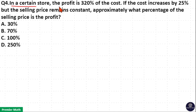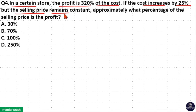In a certain store, the profit is 320% of the cost. If the cost increases by 25% but the selling price remains constant, approximately what percentage of the selling price is the profit?